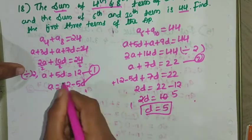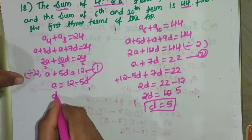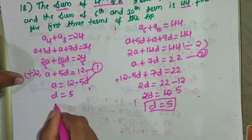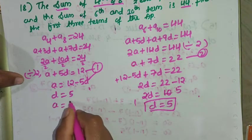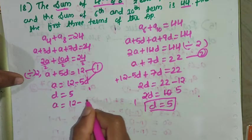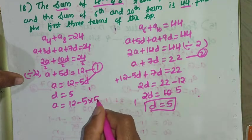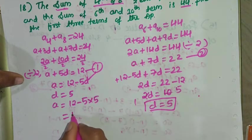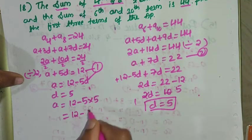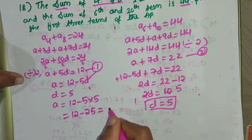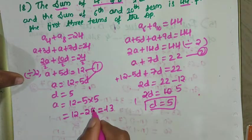Substituting D = 5 back into equation 1: A = 12 - 5 × 5 = 12 - 25 = -13. So A equals minus 13.